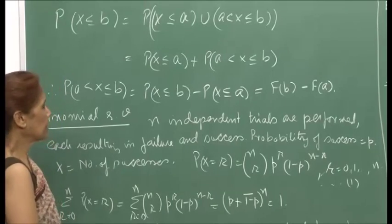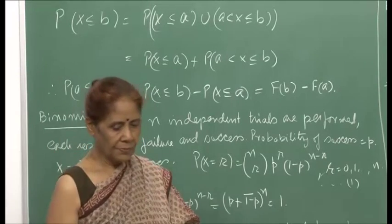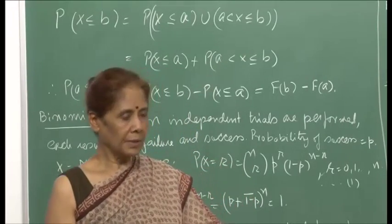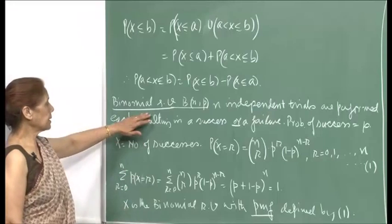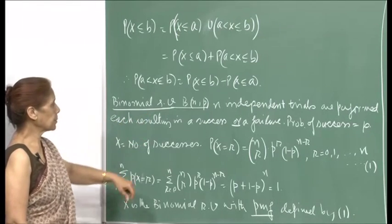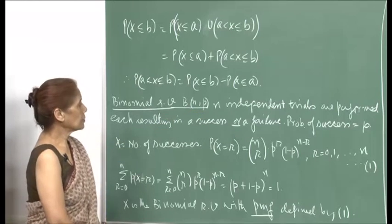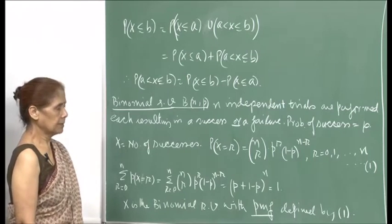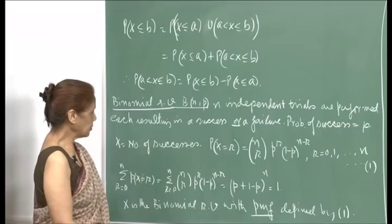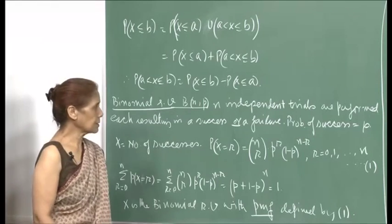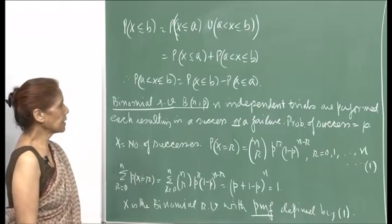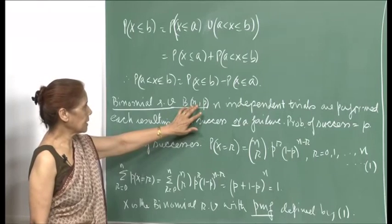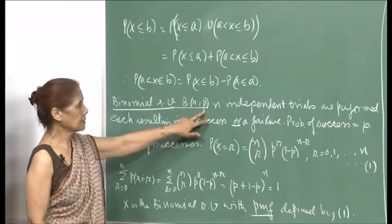Now we will start defining the binomial random variable, denoted B(n, p). Since we have already talked about the Bernoulli random variable, which was a very basic discrete random variable, we define the binomial where n independent trials are performed, each resulting in a success or a failure. The probability of success is p — that is why the notation B(n, p): n is the number of trials and p is the probability of success.